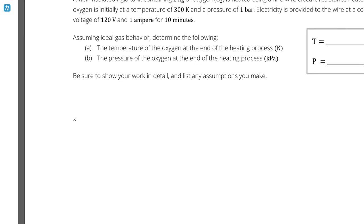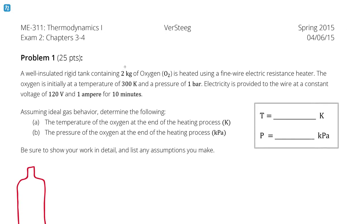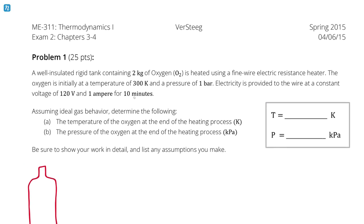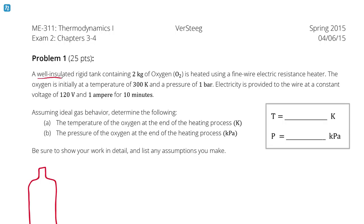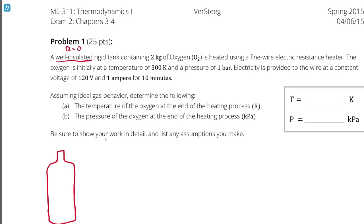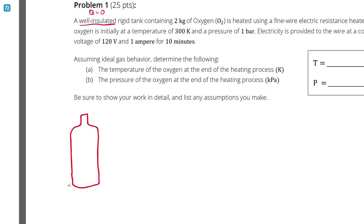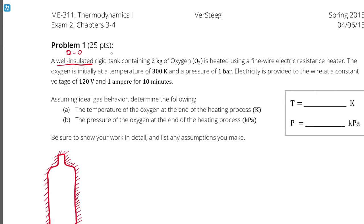Let's begin by drawing out a diagram. I have a rigid tank containing oxygen. Let's go through and pick out the given information in the problem statement. The first key phrase is 'well-insulated.' Well-insulated means I'm assuming no heat transfer is coming from or going into the tank, so I'm going to denote that on my diagram. The next keywords are 'rigid tank.'